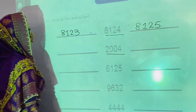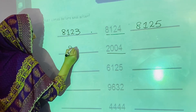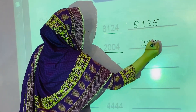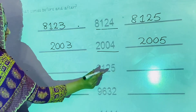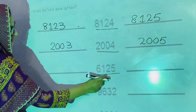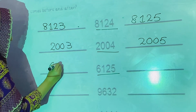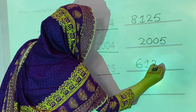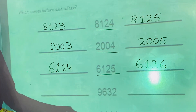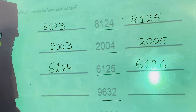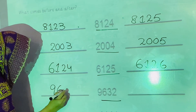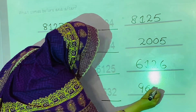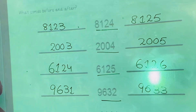The second one is 2,004. What comes before? 2,003. And what comes after? 2,005. The third one is 6,125. What comes before? 6,124. And what comes after? 9,633. In this way you will complete this activity.